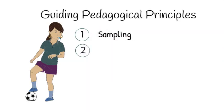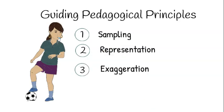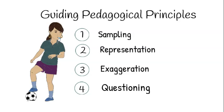The second principle is representation: using small-sided modified games that are appropriate to the age and/or ability of the players. The third is exaggeration: using modifications to games — such as rules, equipment, and playing space — to emphasize a particular aspect of the game. And fourthly, questioning: using questions rather than instructions to prompt student thinking and problem-solving, so that an understanding of what to do, when to do it, and why to do it develops.